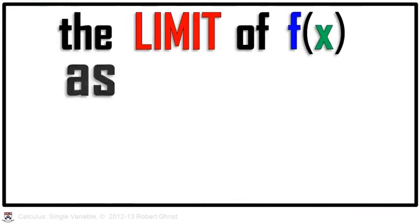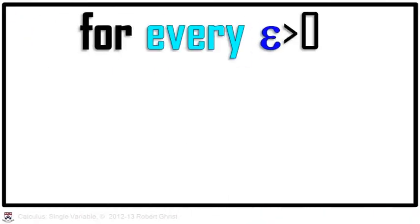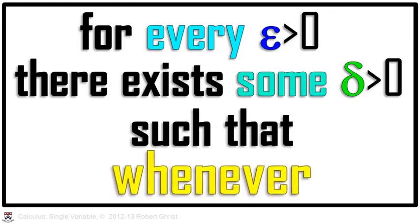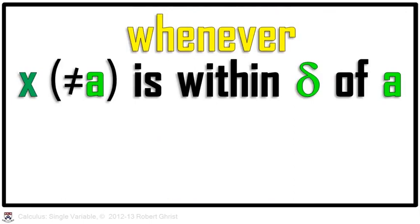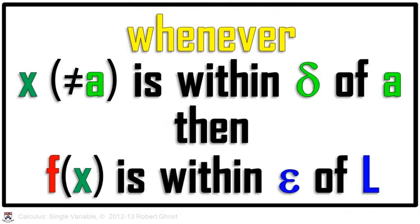What is it? The limit of f of x as x goes to a equals l if and only if, for every epsilon greater than 0, there exists some delta greater than 0 such that whenever x not equal to a is within delta of a, then f of x is within epsilon of l. That is a bit of a mouthful and a lot of students have difficulty with it.